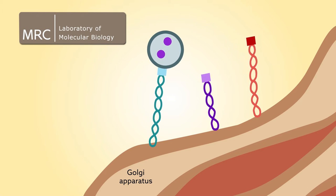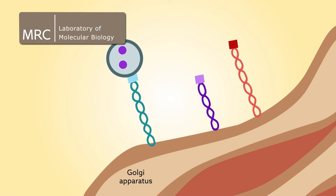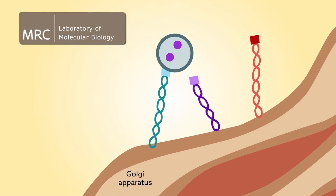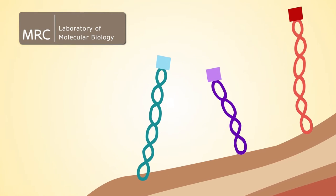Now, researchers at the MRC Laboratory of Molecular Biology in the UK have tracked down the parts of the Golgins that act as postal codes.